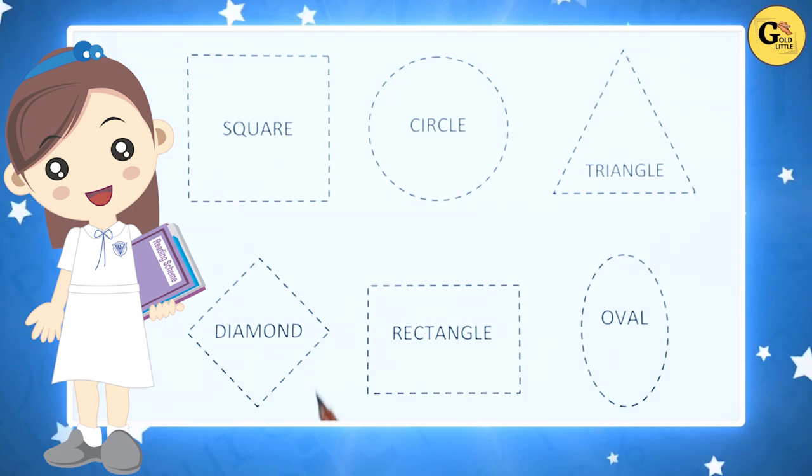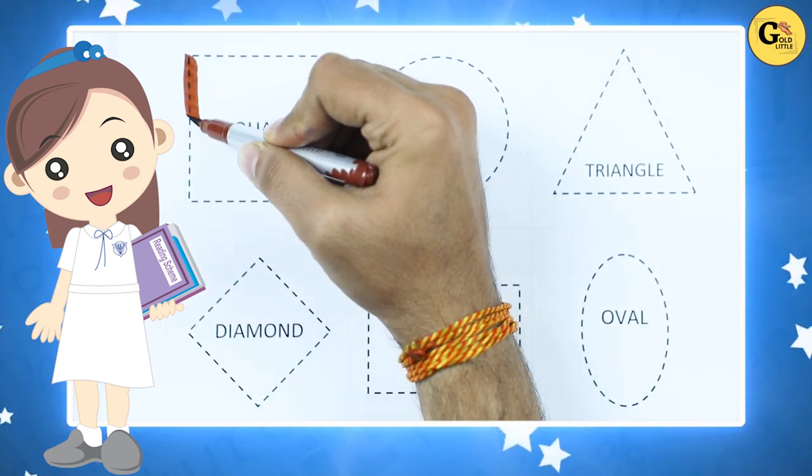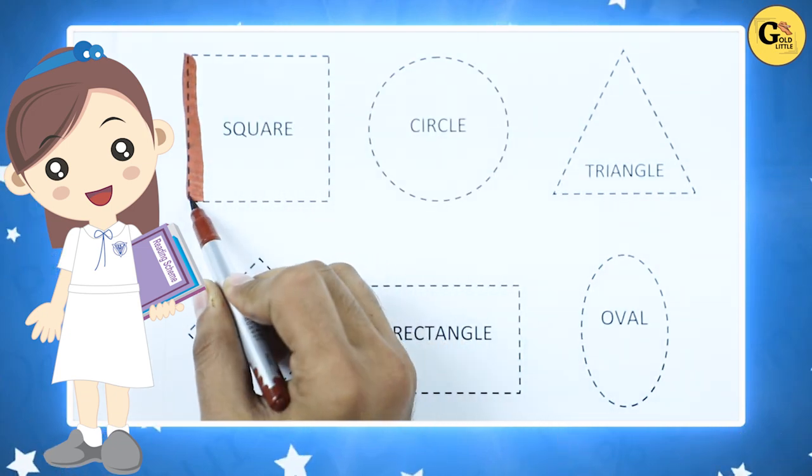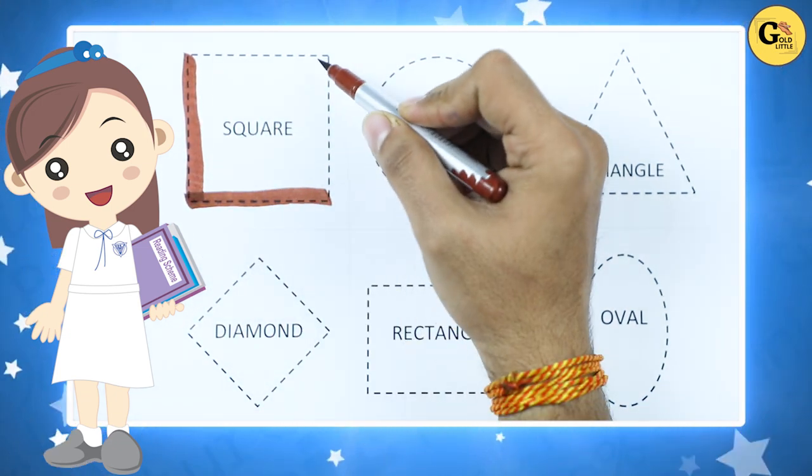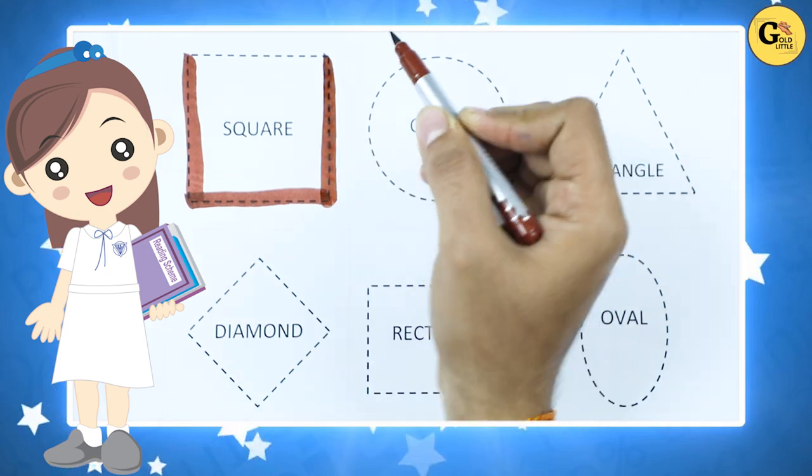It's a square. We draw square with brown color. Square.